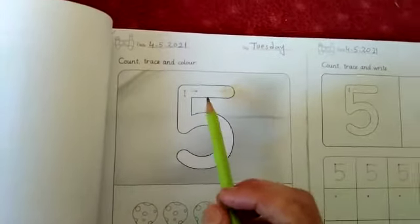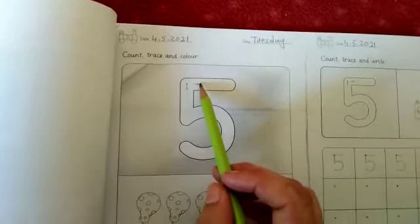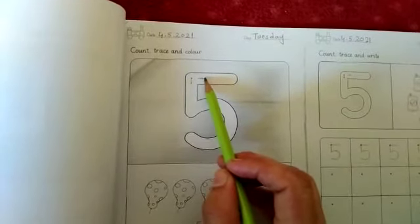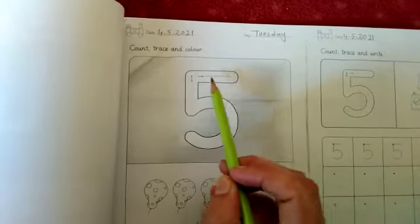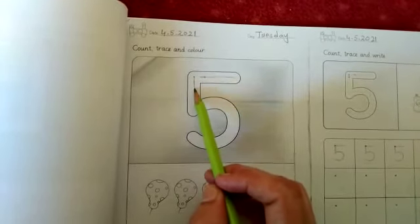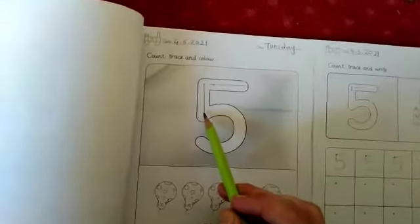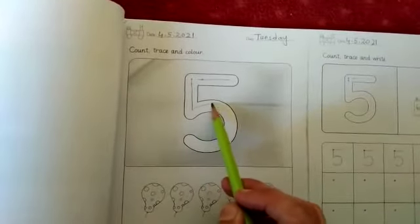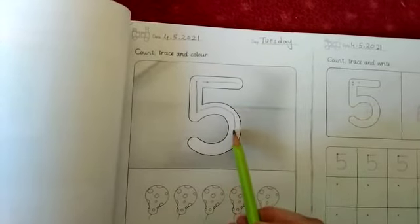First tracing is the address. Trace number 5. First sleeping line, then standing line, and then curve line. This is curve line.